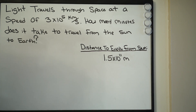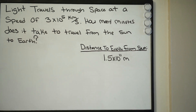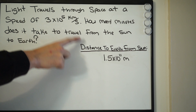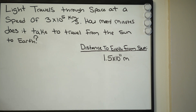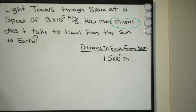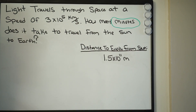Before you go ahead and try to set up this problem, you want to look at your units. Looking at my units here, I'm given kilometers per second and I'm given meters. They want the final answer to be in minutes — that's how many minutes it takes light to travel from the sun to earth.